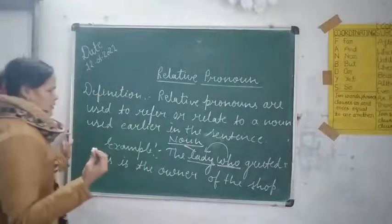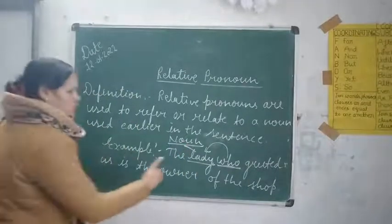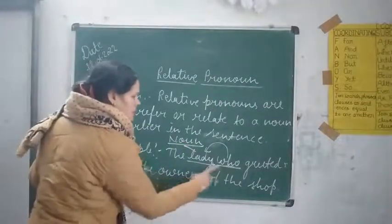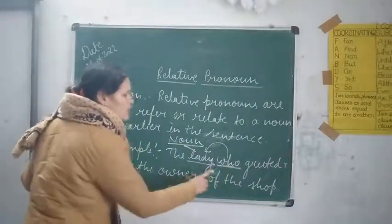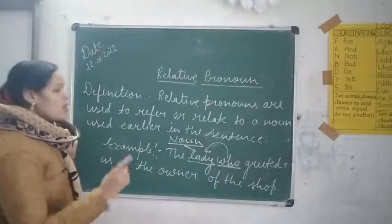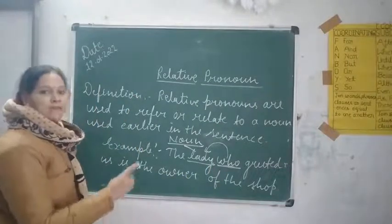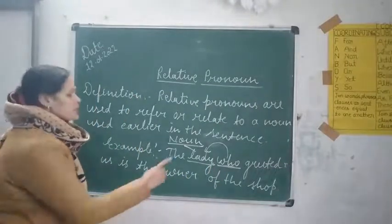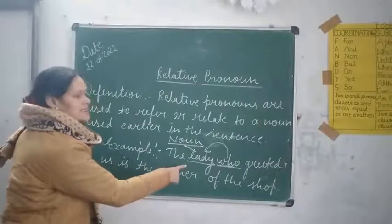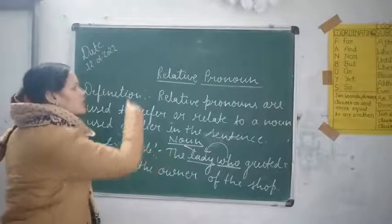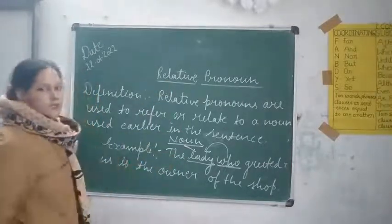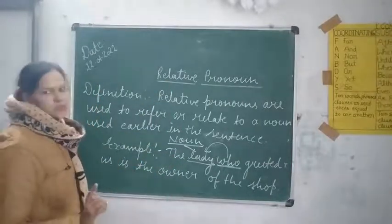So I hope this is understood. Words like who, whom, whose, what, where — all these are used to refer to a noun used earlier in the sentence. They are all known as relative pronouns. Thank you.